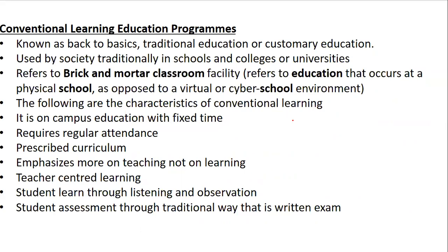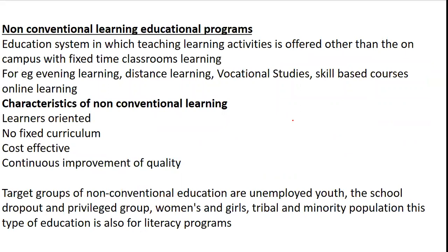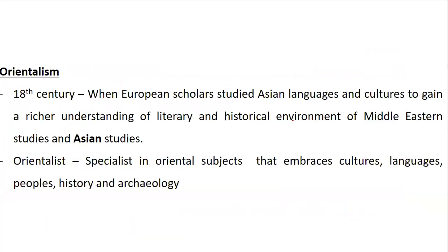Conventional learning, or 'brick and mortar' education, refers to physical education with regular attendance and curriculum playing an important role — it is teacher-centered. Non-conventional or modern learning is learner-oriented, has no fixed curriculum, is cost-effective, and focuses on continuous quality improvement. Orientalism started in the 18th century — Orientalists specialize in culture, languages, people, history, and ontology.